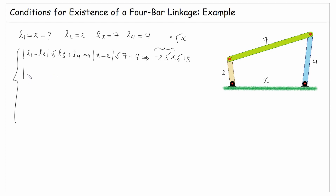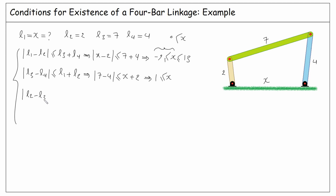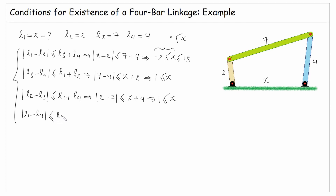The second condition: the absolute value of L3 minus L4 must be less than or equal to L1 plus L2. So the absolute value of 7 minus 4 must be less than or equal to X plus 2, giving X must be greater than or equal to 1. The third condition: the absolute value of L2 minus L3 must be less than or equal to L1 plus L4. So the absolute value of 2 minus 7 must be less than or equal to X plus 4, giving X must be greater than or equal to 1.